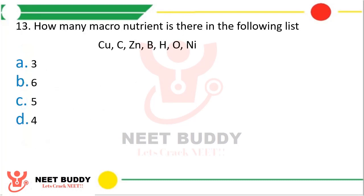Question 13: How many macronutrients are there in the following list? You can see the list — there are a total of 7 elements. How many are macronutrients? The correct answer is Option A — 3 are macronutrients: carbon, hydrogen, and oxygen.